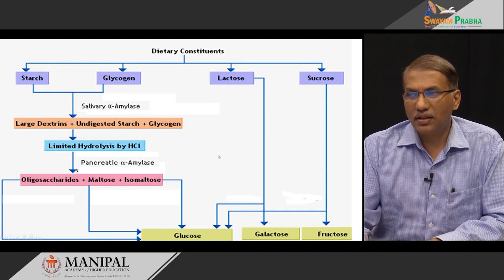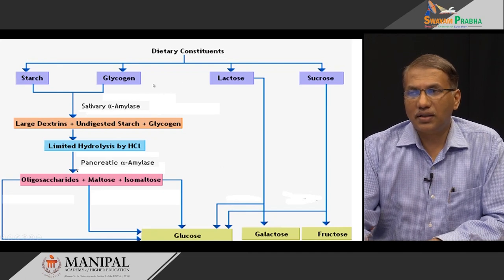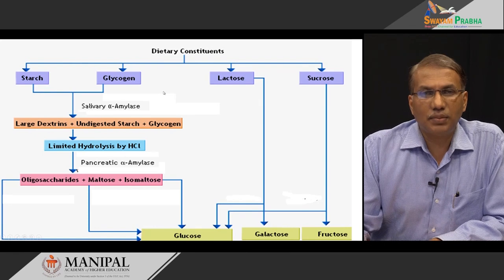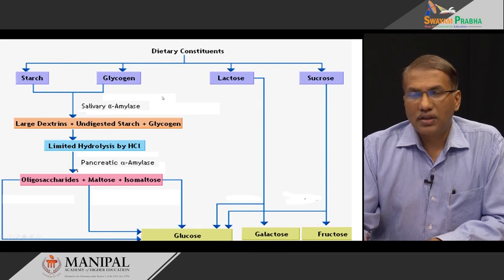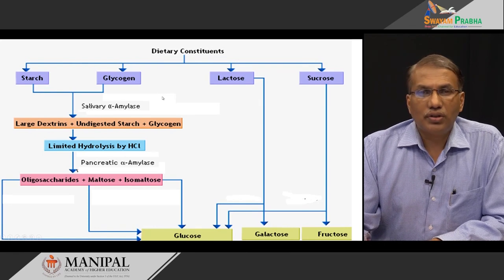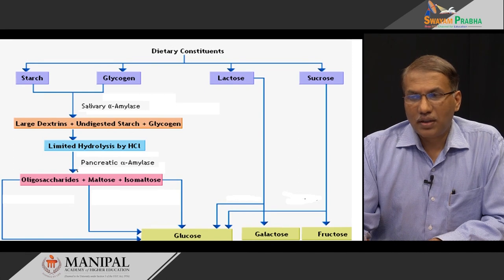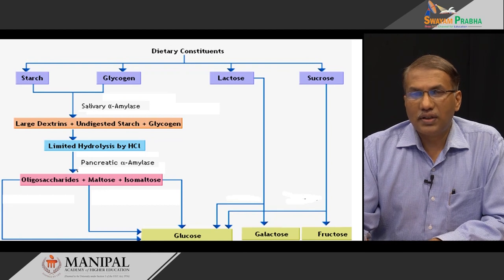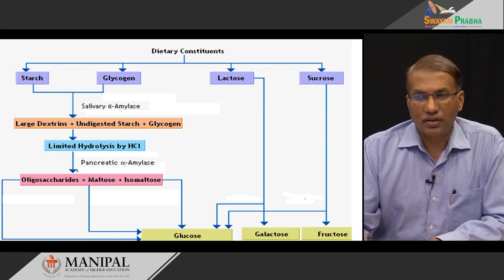One part missing in this diagram is fiber. Fibers are the indigestible carbohydrates which do not have nutritional value by themselves, but they have a very significant role in the digestion and absorption process and definitely affect the absorption of other nutrients in our diet.